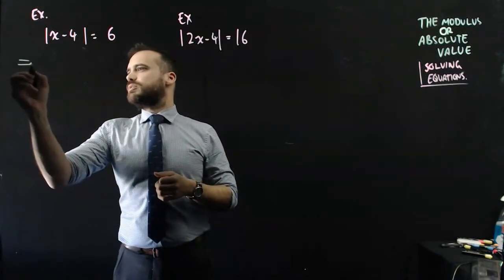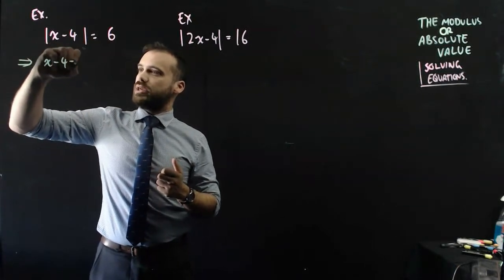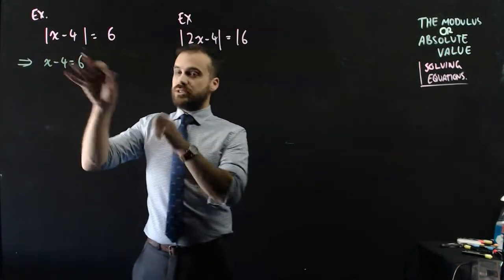This first one implies that x minus 4 equals 6, so that's the positive version.